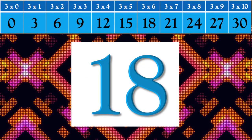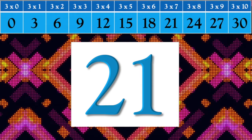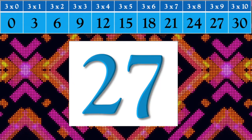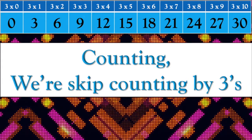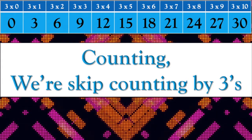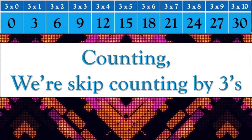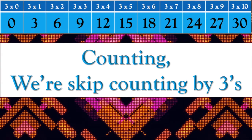3, 6, 9, 12, 15, 18, 21, 24, 27, 30. Counting, we're skip counting by threes.